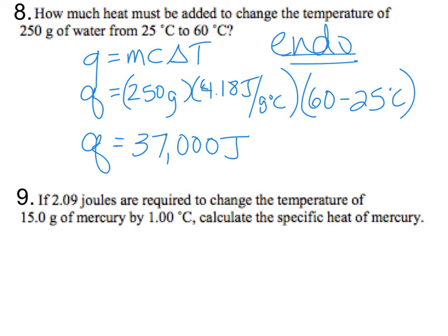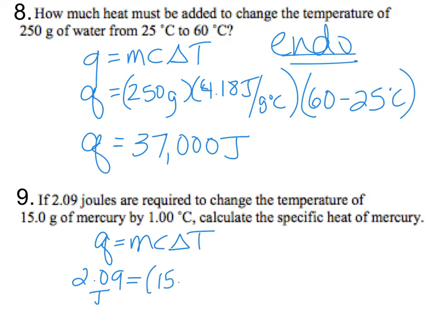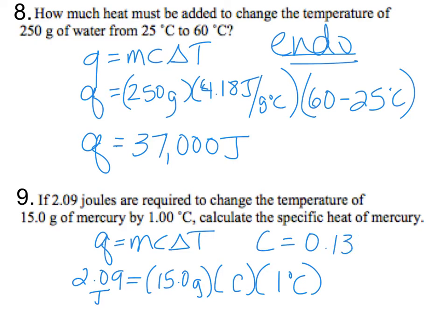Problem nine: if 2.09 joules are required to change the temperature of 15 grams of mercury by one degree Celsius, calculate the specific heat of mercury. We use Q equals mCAT — everything stays positive since you cannot have a negative specific heat. Mass is 15.0 grams, delta T is one degree Celsius, and we solve for specific heat. We get a specific heat of 0.139 joules per gram degrees Celsius.